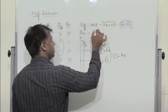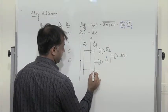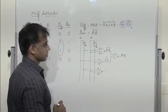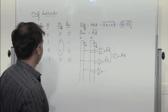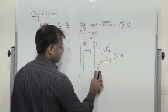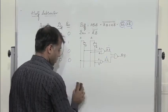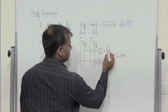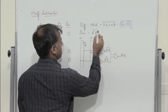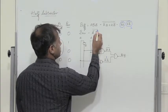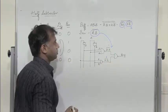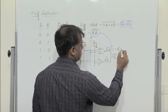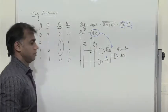For borrow, we need A̅B. If we double complement this and pass A̅ and B through an AND gate, we get the borrow. Observing the XOR implementation, we already have A̅B as an intermediate result. That expression — A̅B — is already available, and we pass it through another inverter to get borrow.